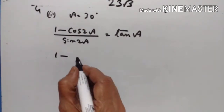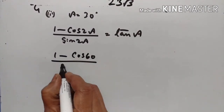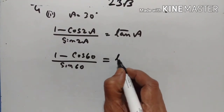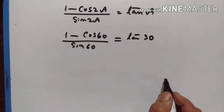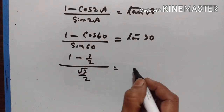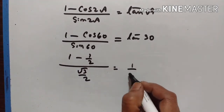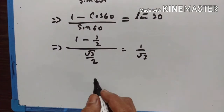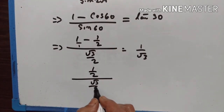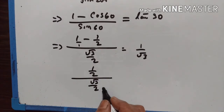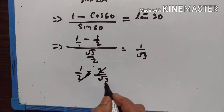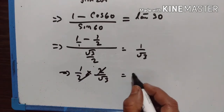1 minus cos(2 into 30) equals 1 minus cos 60. Upon sin(2 into 30) equals sin 60. This should equal tan 30. Cos 60 is equal to half. Sin 60 is equal to square root of 3 upon 2. Tan 30 is equal to 1 upon square root of 3. 1 minus half equals half. Half divided by square root of 3 upon 2, or half multiplied by 2 upon square root of 3. The 2s cancel, leaving 1 upon square root of 3. LHS is equal to RHS.